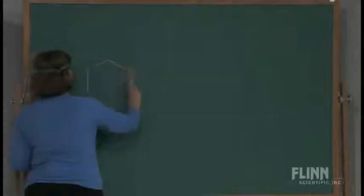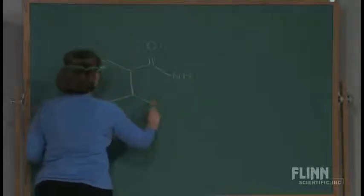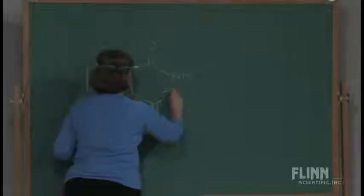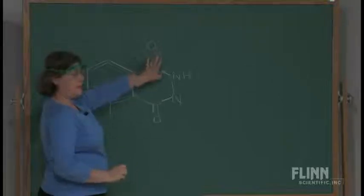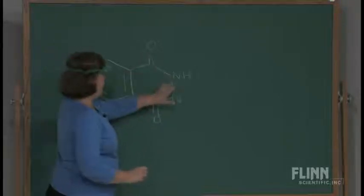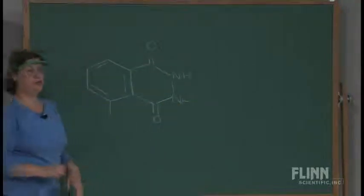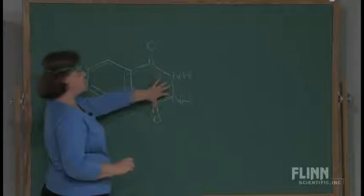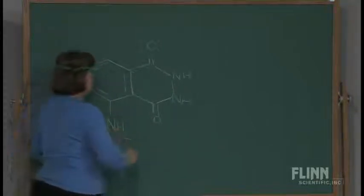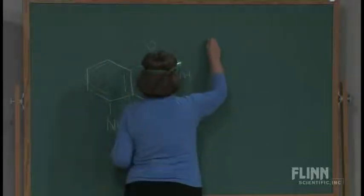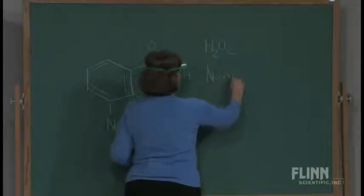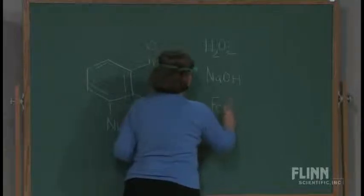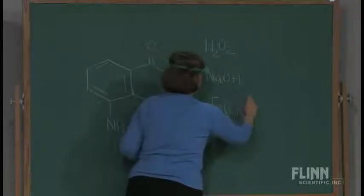The structure of luminol is an organic molecule. What we have here is a benzene ring and two carboxyl groups attached to it — C double bond O — and then NH groups attached to those carbonyl carbons, and so this makes it a hydrazide. And there is an amino group here. We said that the other reactants involved were hydrogen peroxide, sodium hydroxide to make it basic, and we had a catalyst which was ferrocyanide ion, FeCN₆³⁻.